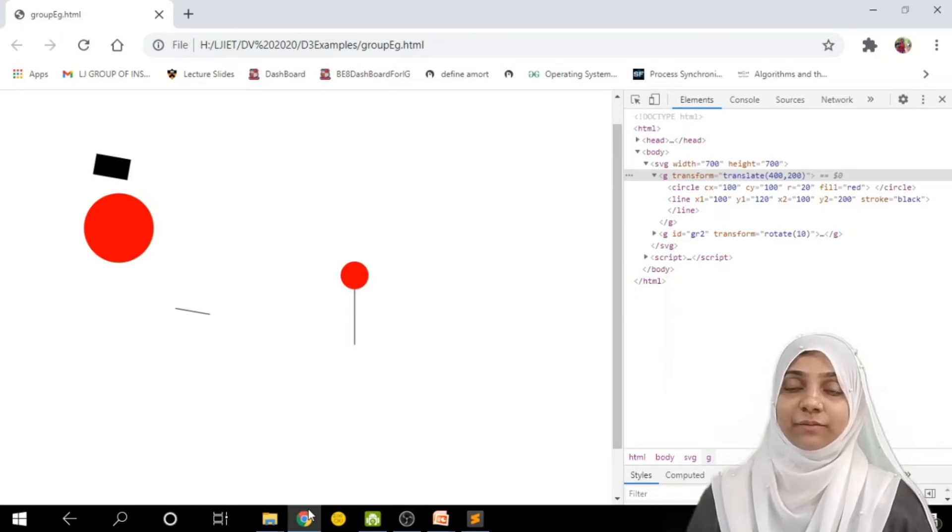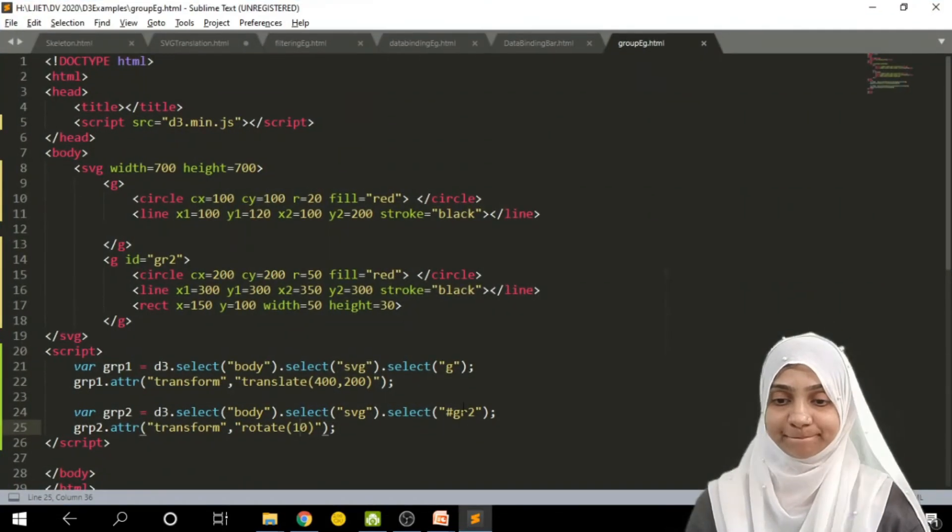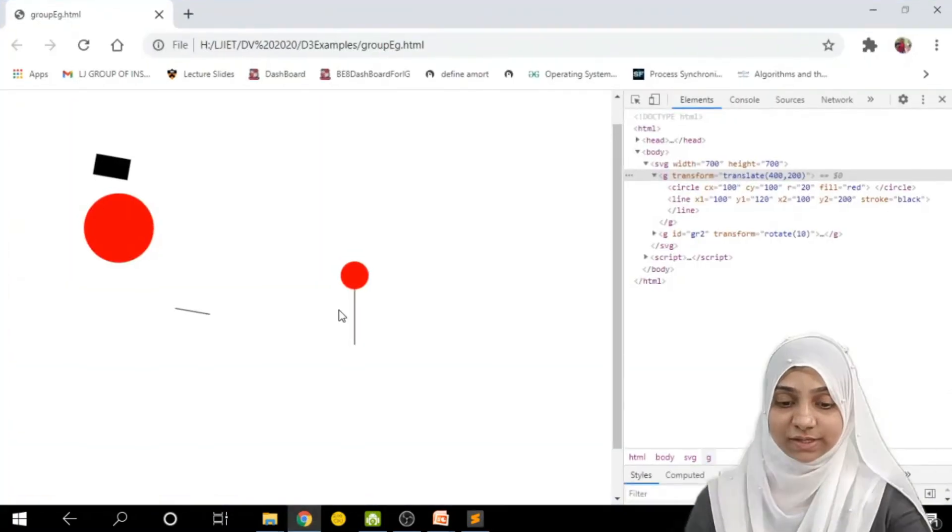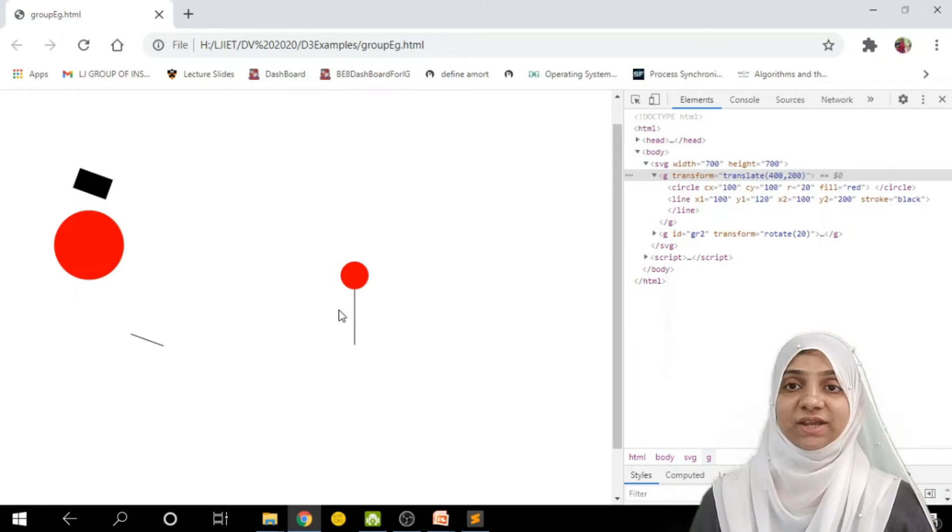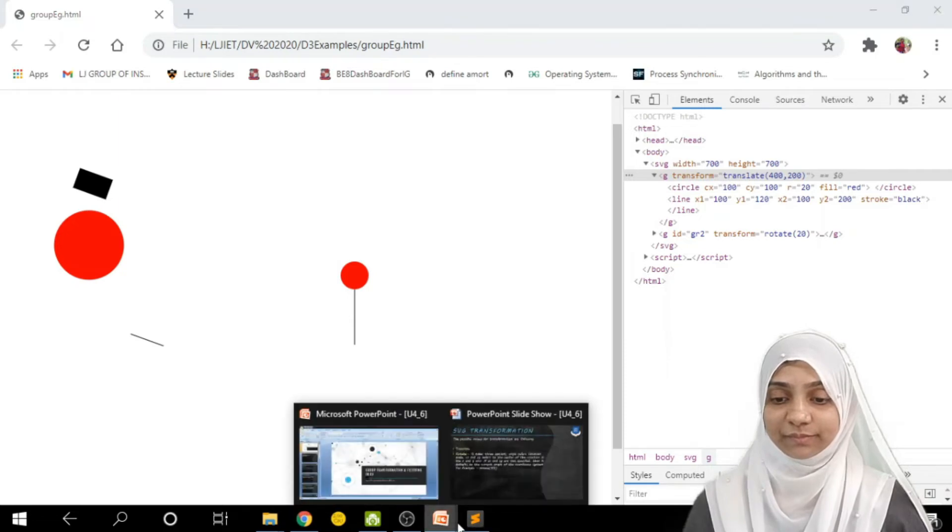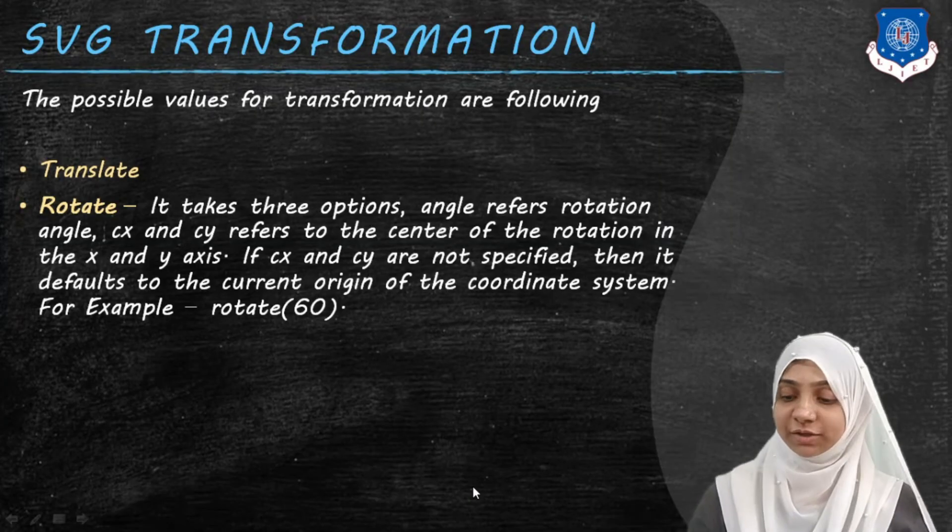If I give minus 10 or minus size of an angle, it will get rotated in anti-clockwise direction. If I rotate it in a 20 degrees, let us see, yes, it is actually rotated 20 degrees in a clockwise direction. So this is how rotation works.